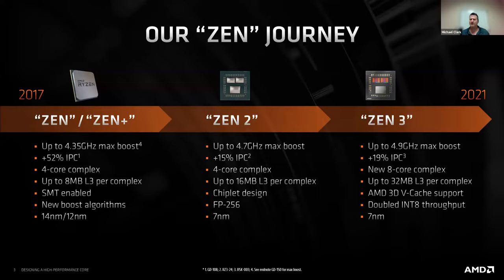When you're doing a new core, along the way there are a lot of things you realize you could have done better. So we like to do a ground-up core and then follow it with what we call a derivative — a really meaty derivative, really improving all parts of the design. So Zen 2 is the derivative of Zen.